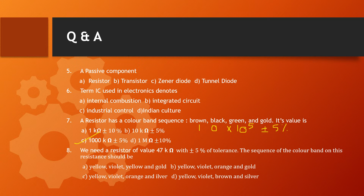Next, question number 8: We need a resistor value of 47 kilohms with plus or minus 5% tolerance. The color band sequence should be: 4 is yellow, 7 is violet, and for kilohms we use 10 to the power of 3, so orange is the multiplier band. For tolerance gold represents ±5%. Striking out other options, the correct answer is Option B: yellow, violet, orange, gold.